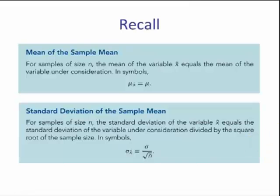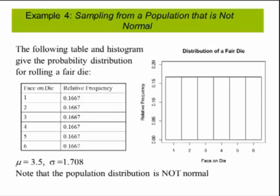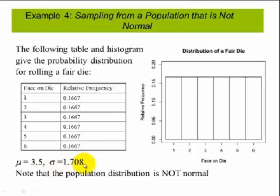In this video, we're going to look at populations that are not normally distributed. The following table and histogram give the probability distribution for rolling a fair die. There are six faces on the die, each with an equal chance of happening. If you calculate the mean for this distribution, it turns out to be 3.5, and the standard deviation turns out to be 1.708. This is what the histogram looks like — each number has an equal chance. This is called a uniform distribution, so this population is not normal.